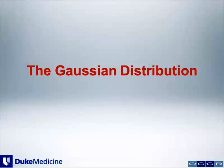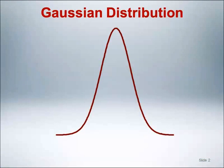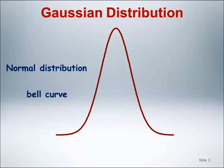Let's discuss the Gaussian distribution. There is a good chance that you are familiar with the Gaussian distribution in some context. It's more commonly referred to as the Normal Distribution or the Bell Curve.